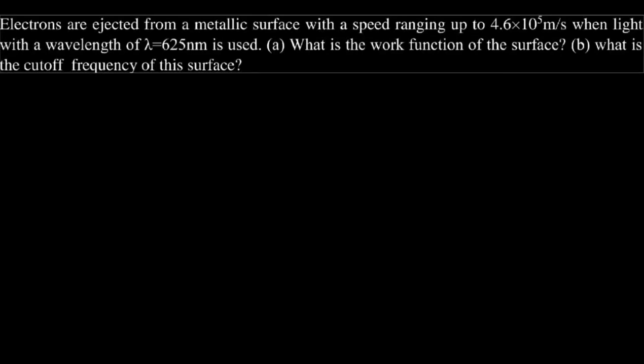You saw the title, so let us get directly into it. Electrons are ejected from a metallic surface with a speed ranging up to 4.6 times 10 to the power 5 meters per second, when light with a wavelength of 625 nanometers is used.